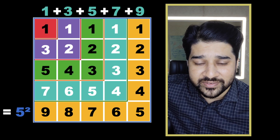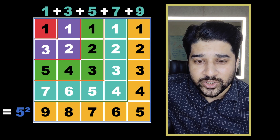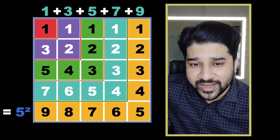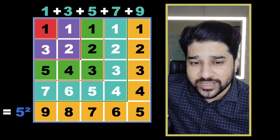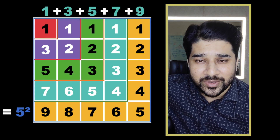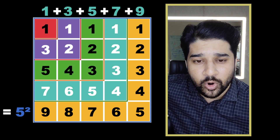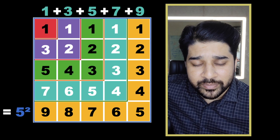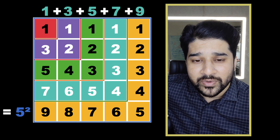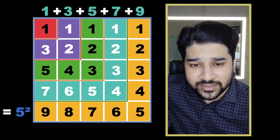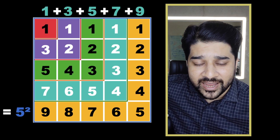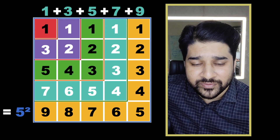So if you notice, we added three, then five, then seven, then nine. What are these numbers? One, three, five, seven, nine — we call them odd numbers. One being the first odd number, three being the second, five being the third, seven being the fourth, and nine being the fifth odd number.